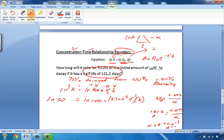So, let's go ahead and solve for time. Let's figure out how long it takes for 70% of this tungsten to decay and to leave us with only 30%. Should it have a half-life of 121.2 days.